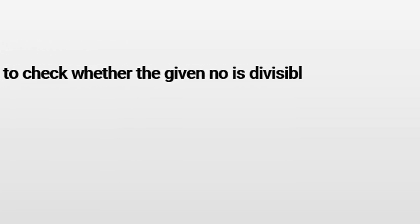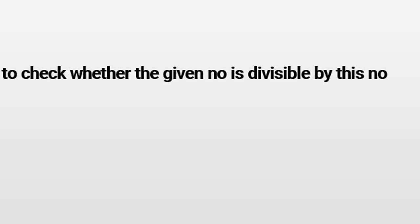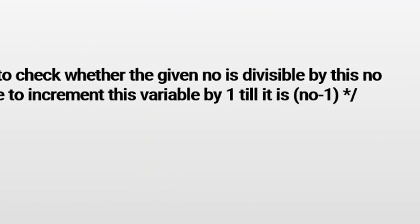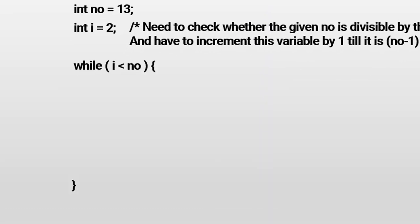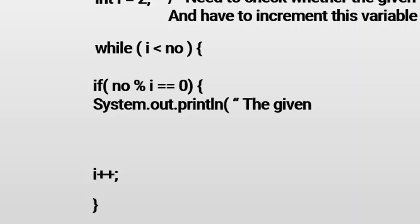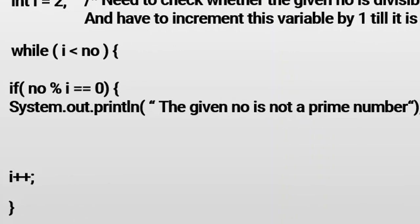Every time we need to check whether 13 is divisible by i, and we increment i until it reaches number minus 1, which is 12. We can use any iterative statement — here I've used a while loop: while i is less than number. Every time we increment i with i++. Before incrementing, we check the condition: if number remainder i equals 0, then we can say the given number is not a prime, and we break out of the loop using the break statement.